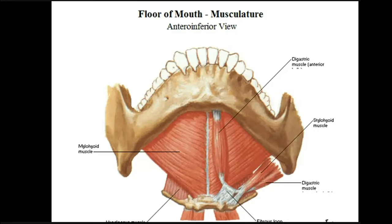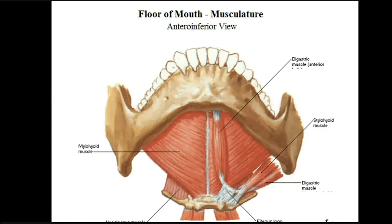The artery to mylohyoid is a branch of the inferior alveolar artery. Before it enters the mandibular foramen, it gives rise to both the artery and nerve to mylohyoid, which run in the mylohyoid groove and then spread to supply the mylohyoid muscle. There is a posterior free border for the passage of structures. For example, the hyoglossus muscle — a muscle of the tongue — passes inside the oral cavity through this posterior free border.